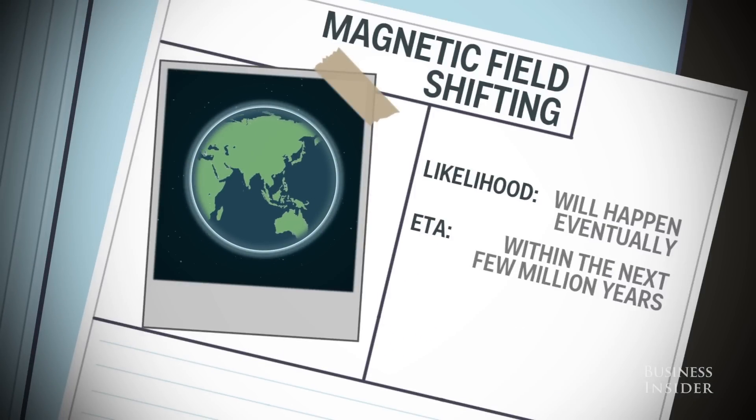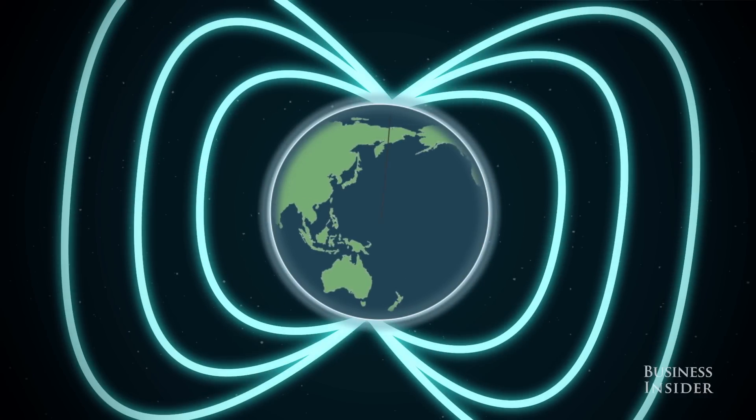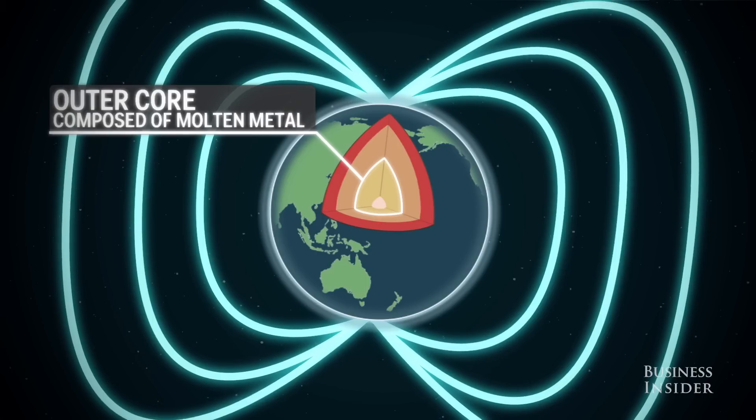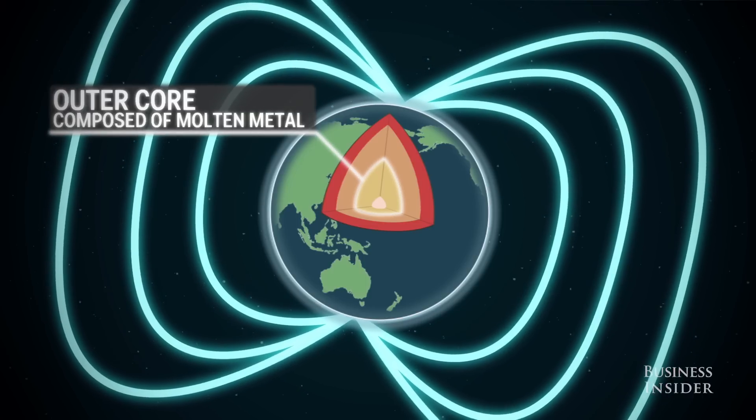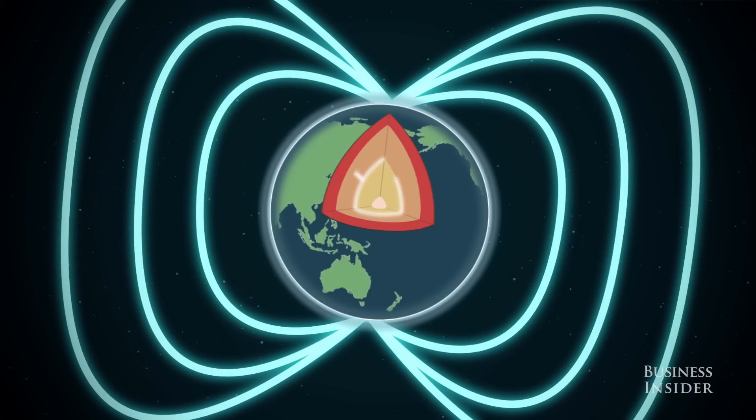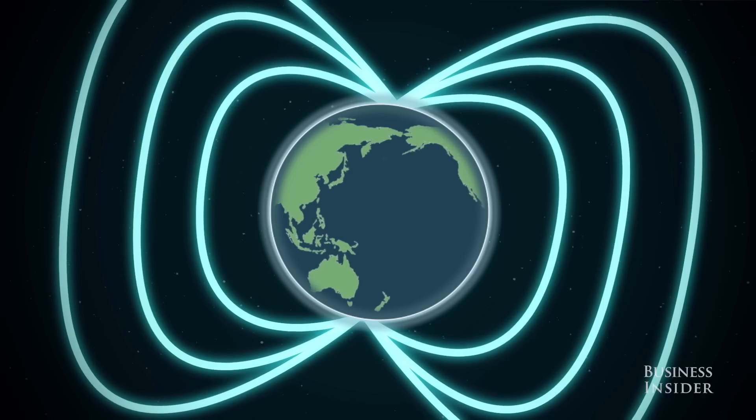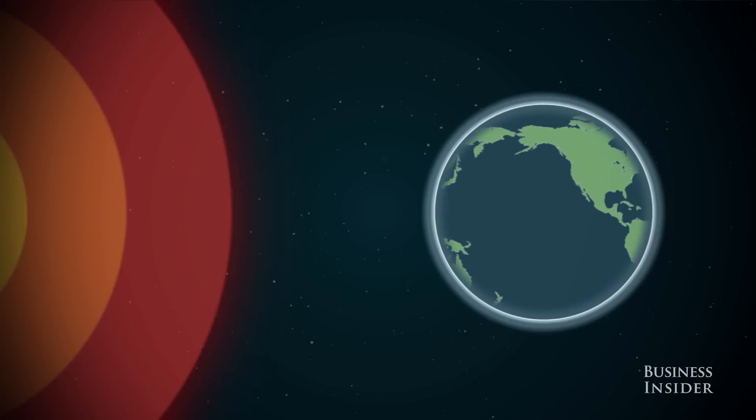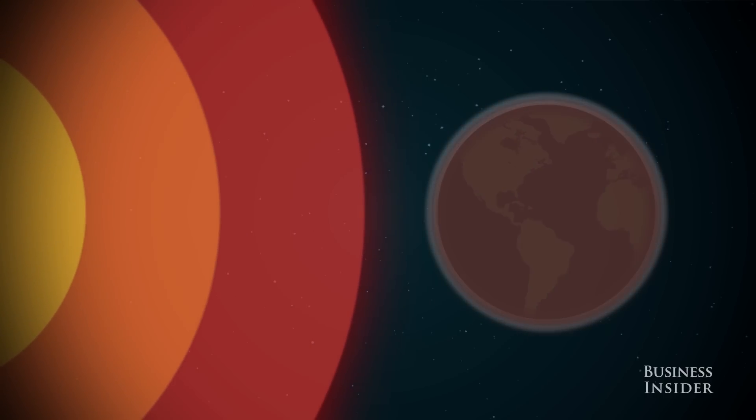The magnetic fields that protect the Earth from the Sun's highly radioactive solar winds are the result of iron and molten metal present at the Earth's core. Over time, the movement of this liquid metal causes the magnetic field to shift and weaken in certain areas. We don't know for sure what this could mean for humanity. That would mainly depend on how long it takes for the magnetic field to shift, which can take thousands of years. But a weakened magnetic field can allow solar flares and cosmic background radiation to reach the surface of the Earth, killing many species.